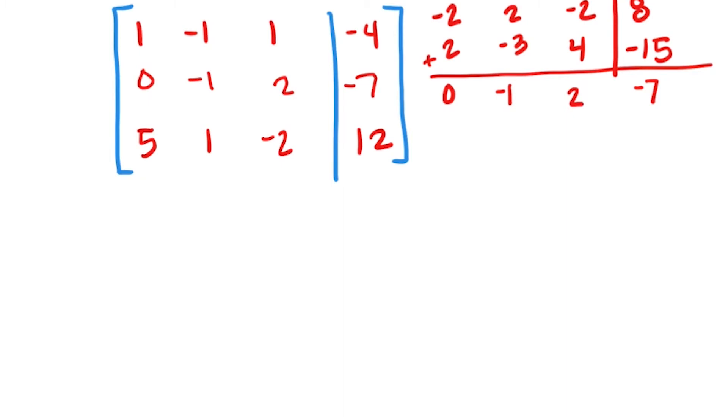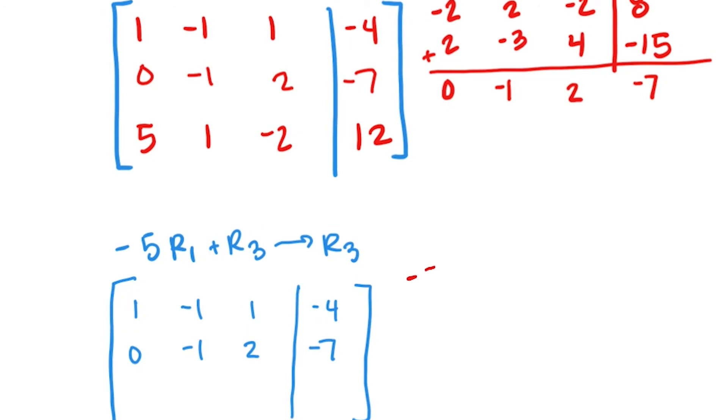As we look back at this matrix, the next number I would want to get is this one right here. I want this to be a 0. I'm going to use row 1 in the same way I did before to help me with row 3. If this was a negative 5, then when I add those rows together, I'll get a 0. So I'm going to say negative 5 times row 1 plus row 3 to change row 3. So because we're changing row 3, row 1 and row 2 are not changing. So off to the side, I'm going to do negative 5 times row 1, which is -5, positive 5, -5, 20, added to 5, 1, -2, 12. And that's 0, 6, -7, 32. So we have 0, 6, -7, 32.